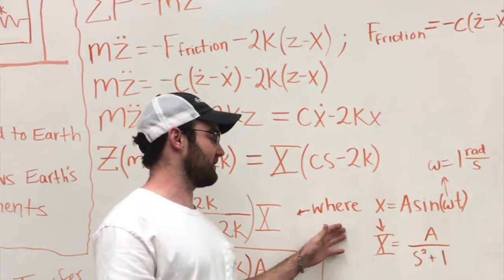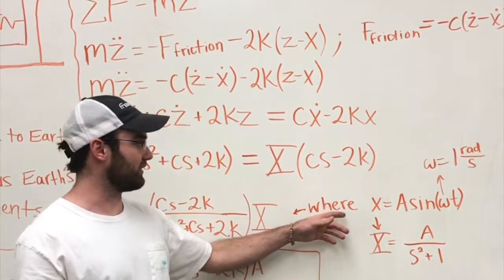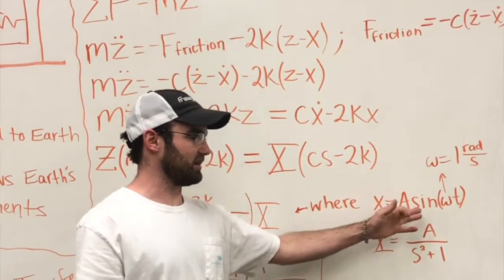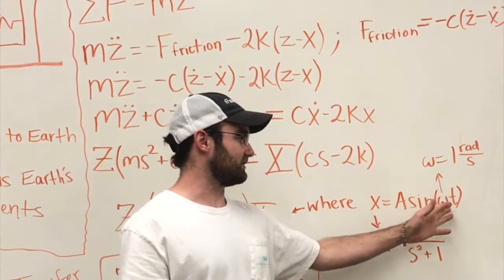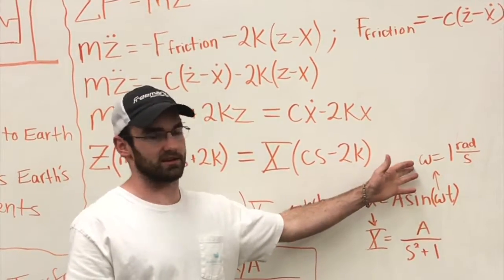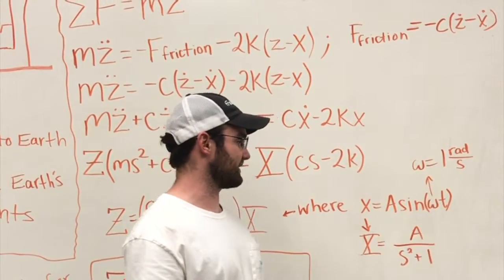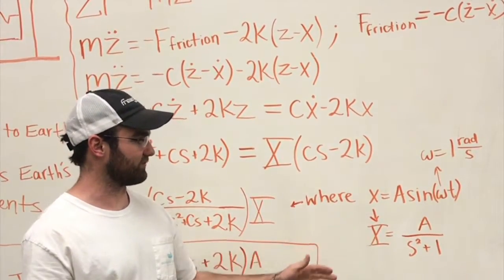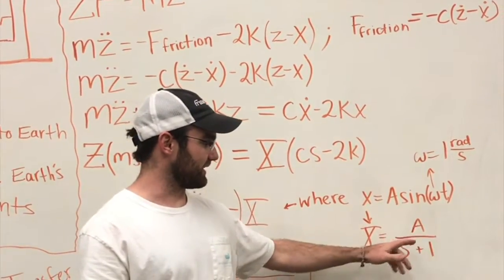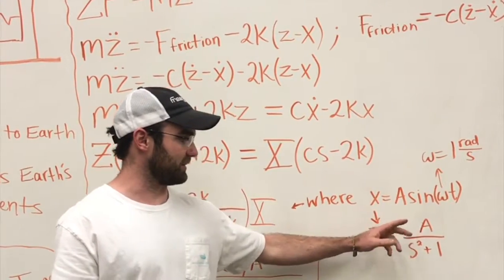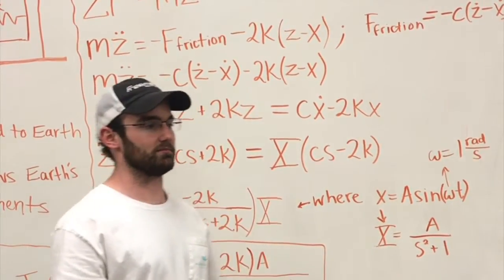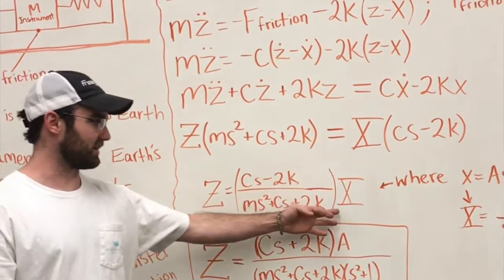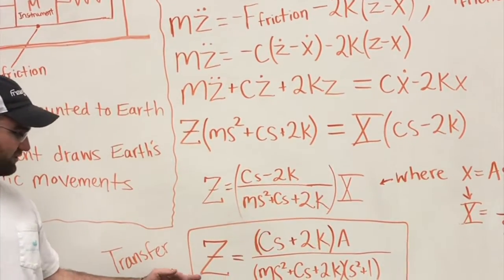We know that we can assume that the movement of the earth, x, we can say is the amplitude A sine times ωt. So ω or omega we're given is one radian per second. We can get big X by our Laplace transforms, which turns out to be A over s squared plus one. So substituting this into this equation, it now moves into our transfer function.